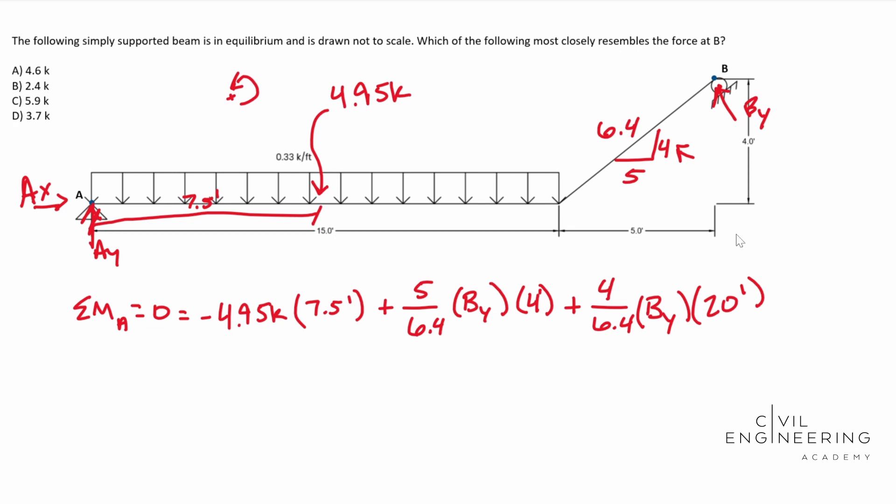After that, if we simplify some stuff down, you end up with zero equals a negative 37.125 kip feet. And then we're going to add BY and we're going to simplify this down. This stuff ends up being 15.625 feet. BY is in kips, we need to remember that. And so when we solve for BY, this ends up being 2.38 kips.